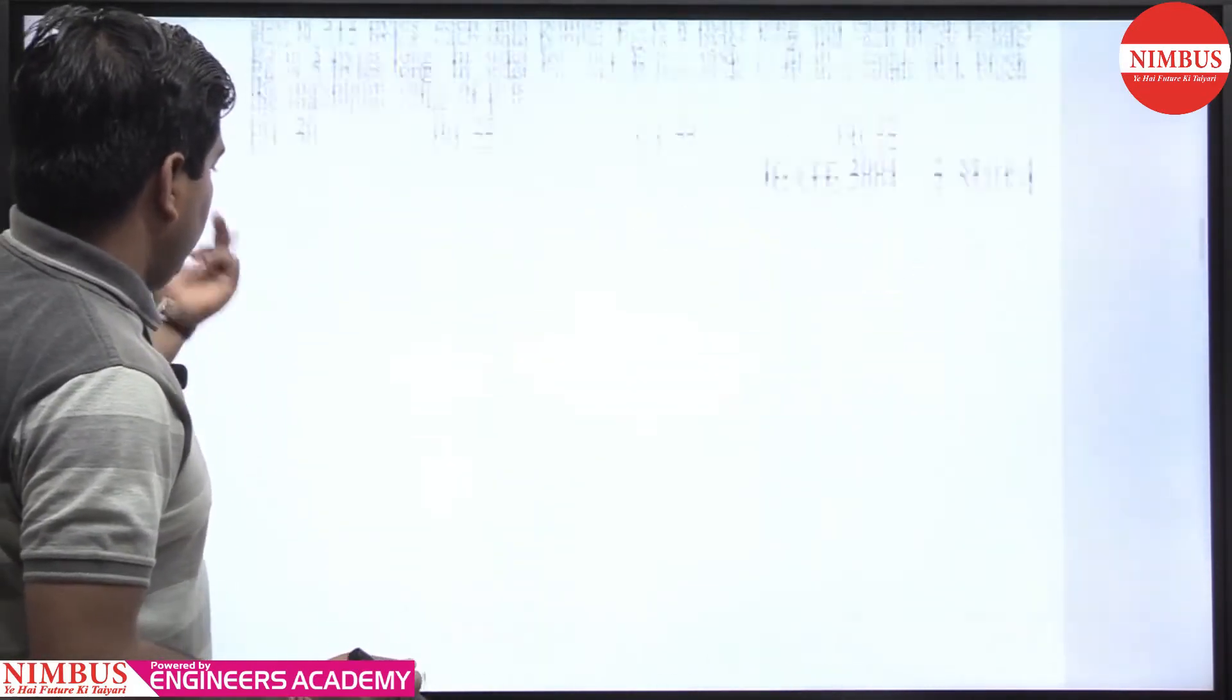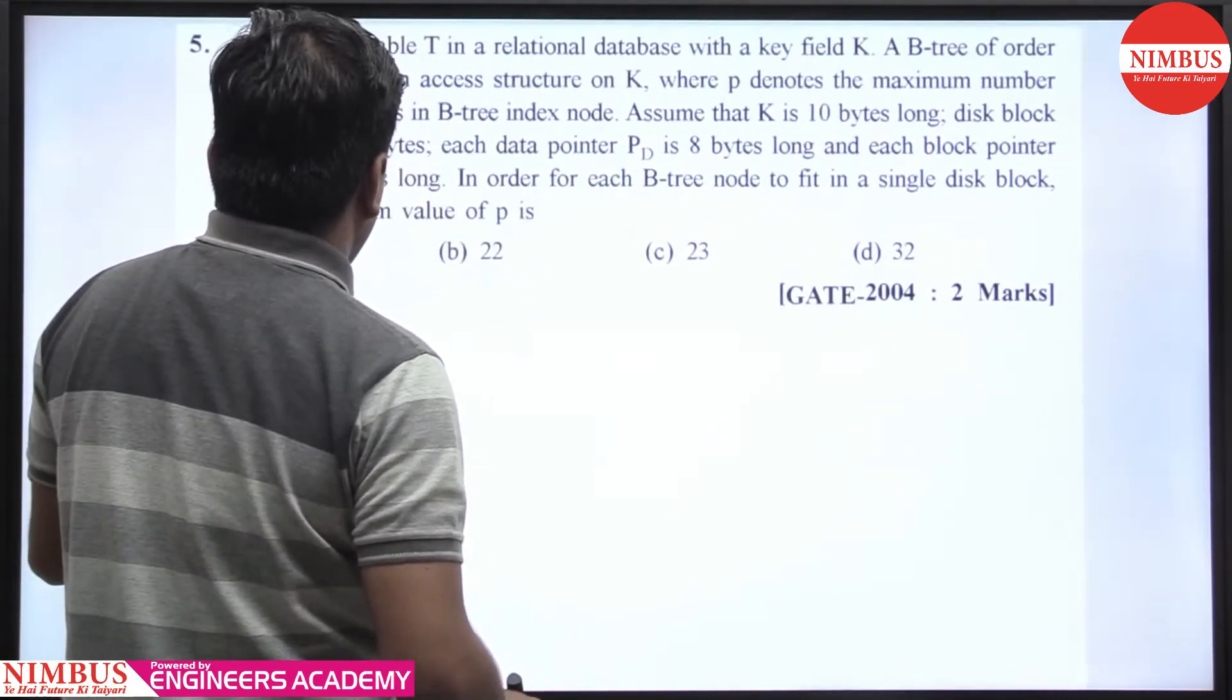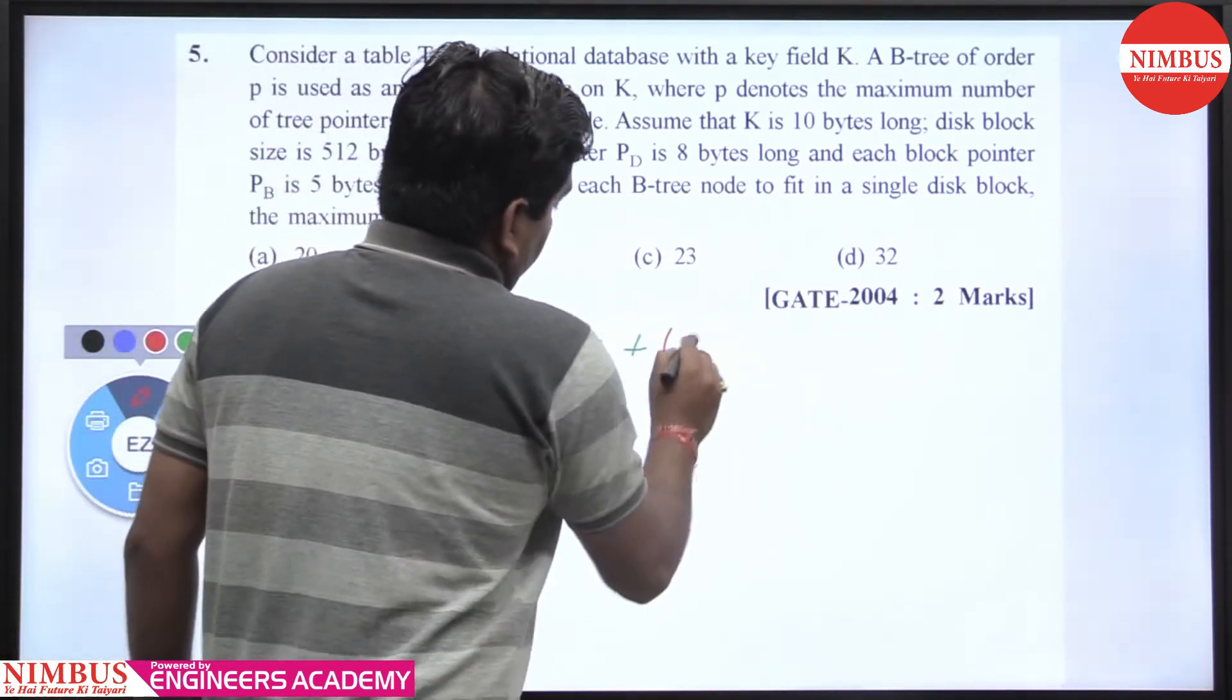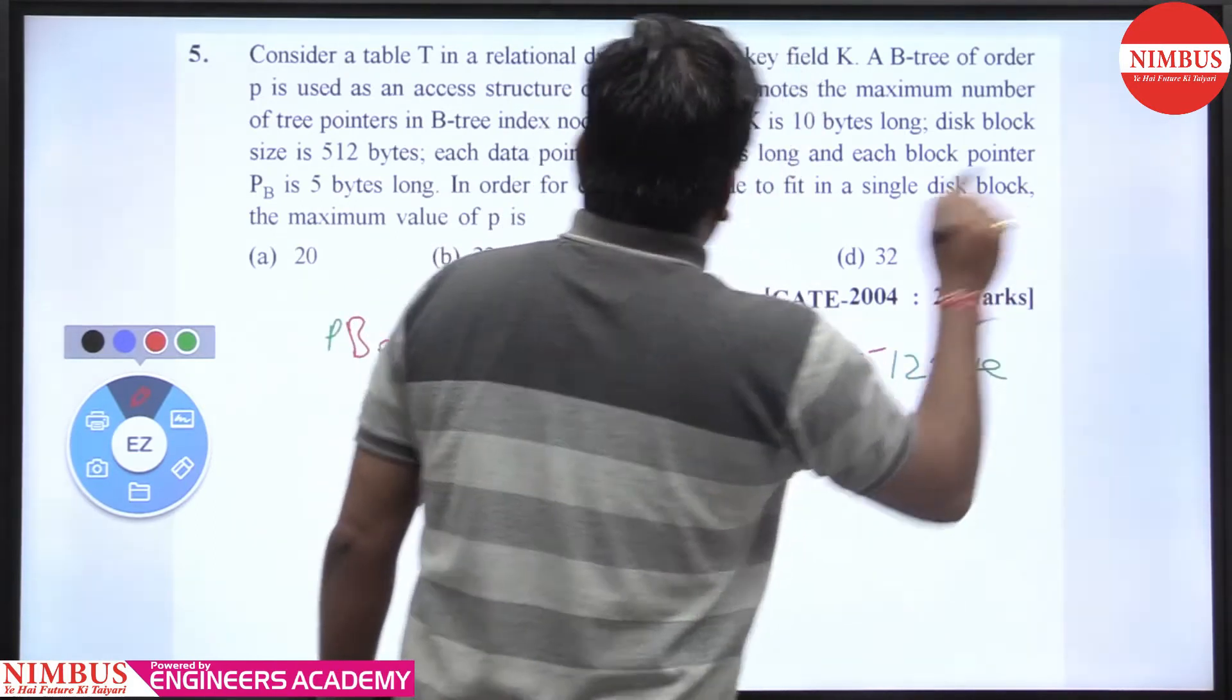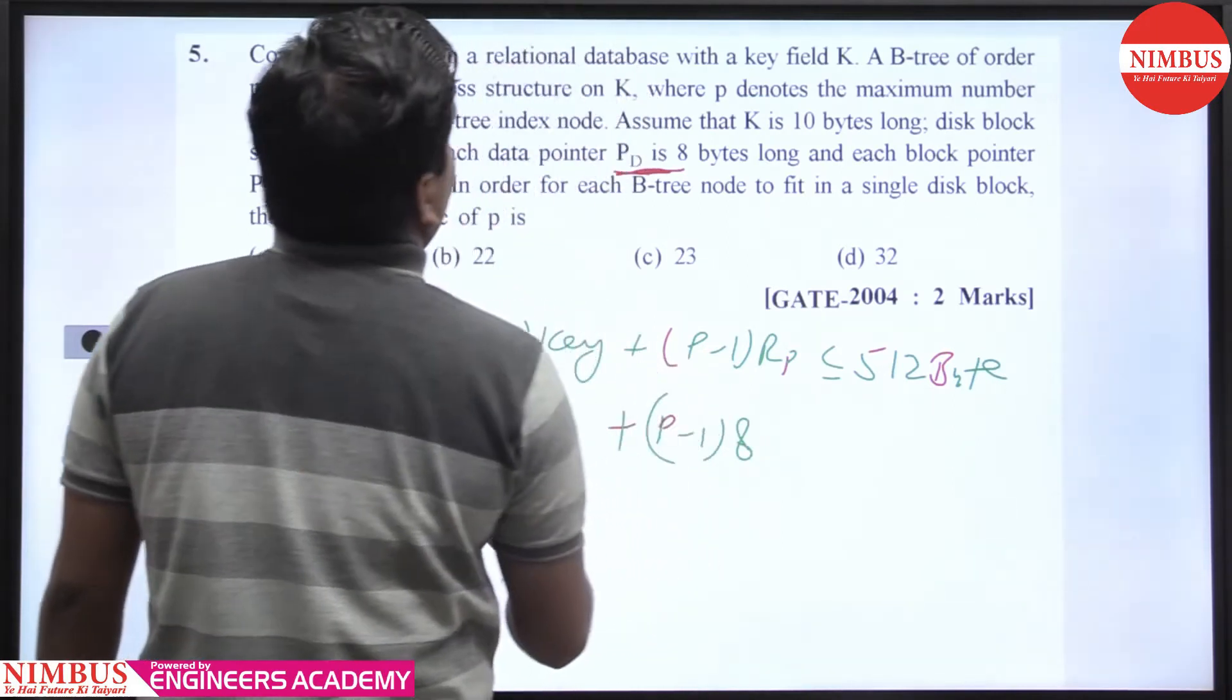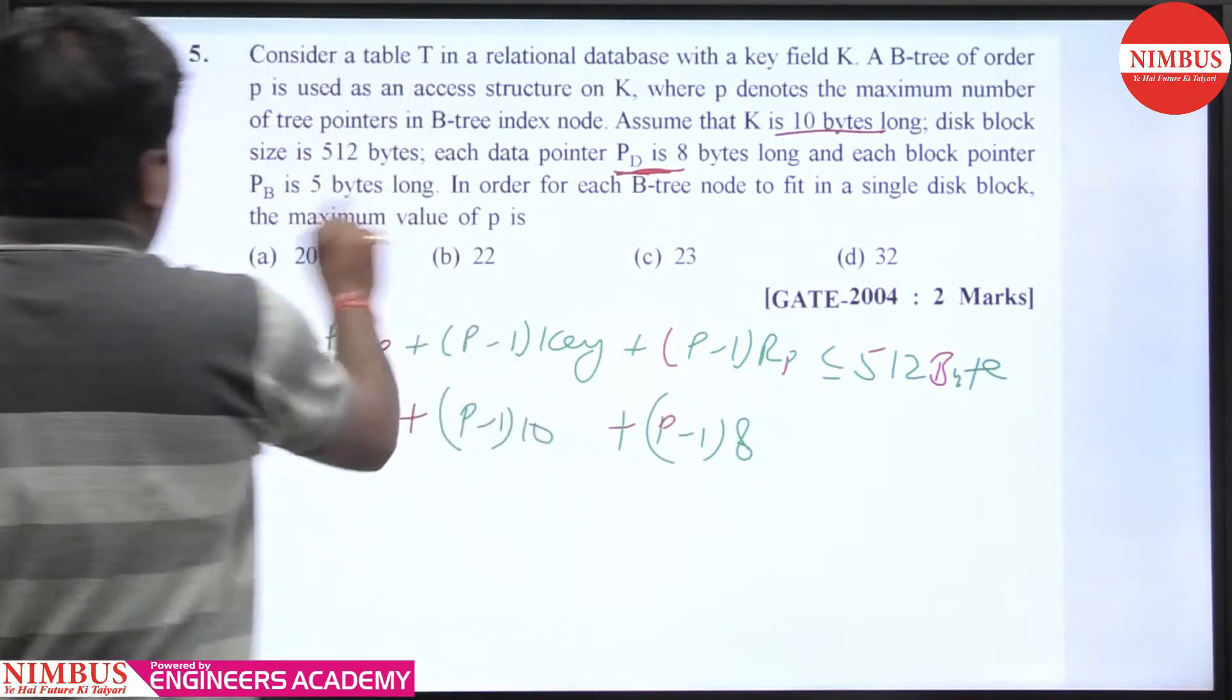Here you can see, we can solve: P block pointers, P minus 1 keys, P minus 1 record pointers, less than or equal to 512 bytes. What is the size of block pointer? Record pointer is P minus 1 times 8 bytes, key is 10 bytes, P minus 1 times 10 bytes, and block pointer is 5 bytes.